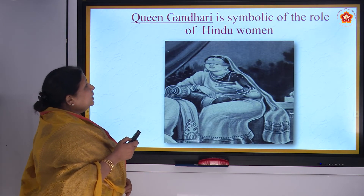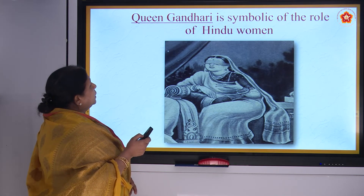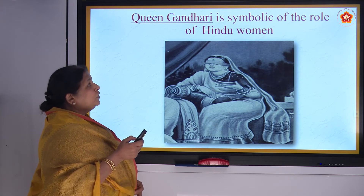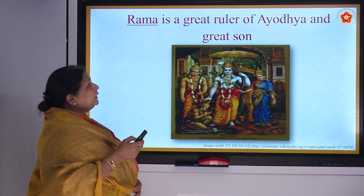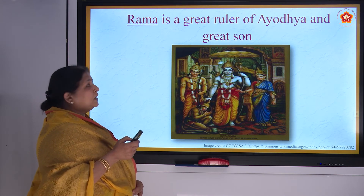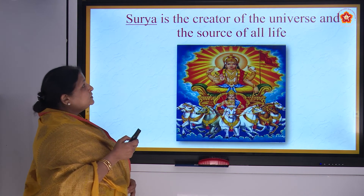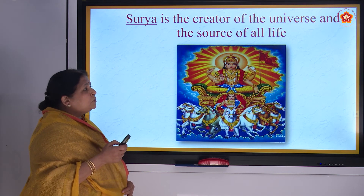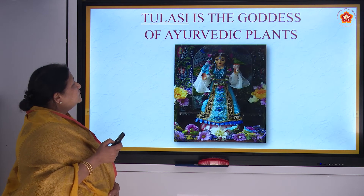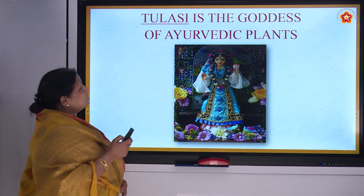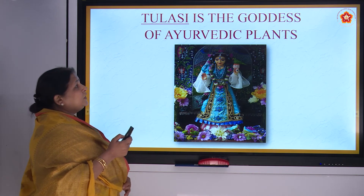Q — Queen Gandhari is symbolic of the role of the Hindu woman. R — Rama is a great ruler of Ayodhya. S — Surya is the creator of the universe and the source of all life; Surya's other name is Vivasvan. T — Tulsi is the goddess of Ayurvedic plants.